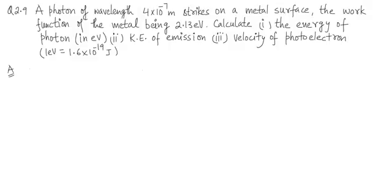The work function of the metal being 2.13 electron volt. Calculate part 1, the energy of photon in electron volts. Second, kinetic energy of emission. And third, velocity of photoelectron. You are given that 1 electron volt is equal to 1.6 into 10 to the power minus 19 joules.